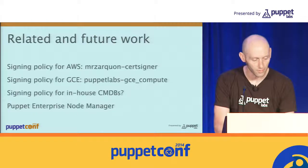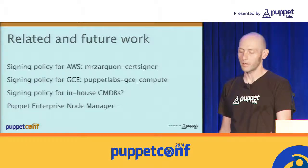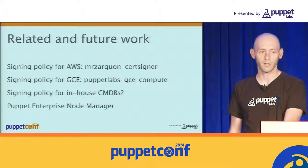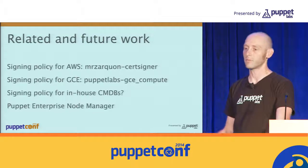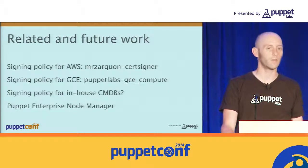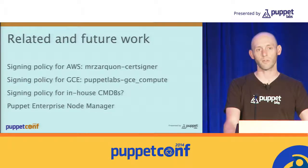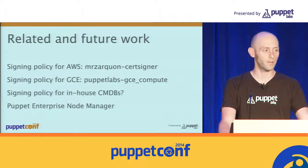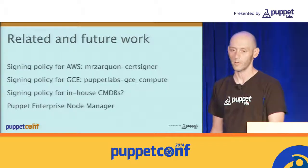Some related work: this module came from Chris Barker originally and is available on the Forge as CertSigner, though it doesn't have all the changes I made for this talk. There's a related one by Ryan Coleman presented at a Puppet camp that does the exact same workflow but uses Google Compute Engine as the API. You could also extend this to sign against an in-house CMDB — Spotify does this, querying their configuration management database to verify instances are in a valid state before issuing a certificate. You can also use the trusted hash inside the node manager to make classification decisions.